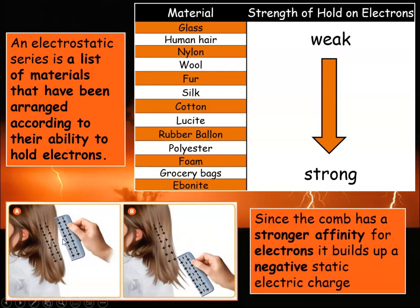The same thing happens when you brush your hair. Originally both your hair and the brush are neutral, but if the comb is plastic — which is further down the electrostatic series — it has a stronger pull on electrons. The plastic takes electrons from the human hair, so the comb becomes negatively charged and your human hair becomes positively charged. This is especially the case when the air is very dry, because charges aren't able to bond with the water molecules that would be in the air when it's not as dry.